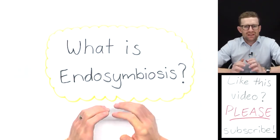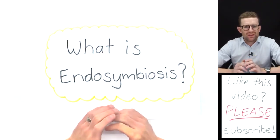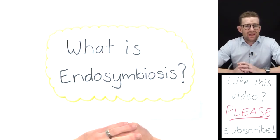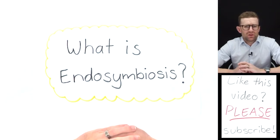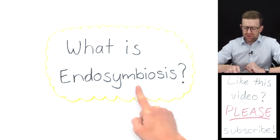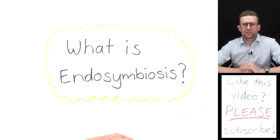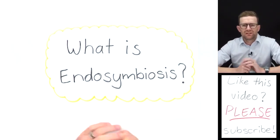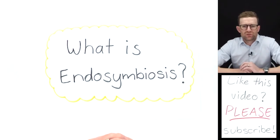One of the most interesting and important events in the evolution of life on earth involves the development of the first eukaryotic cells. It involves this process called endosymbiosis. Let's take a look at what it's all about.